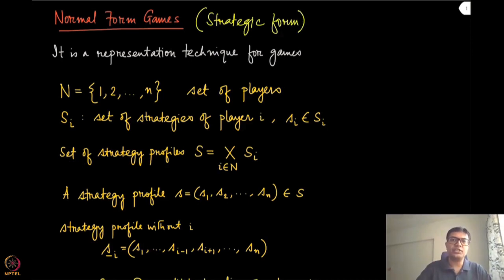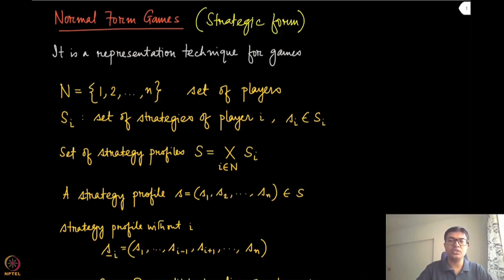Strategic form or normal form games are most appropriate to represent games which are of one round. The moment you pick your actions, the outcomes are realized and you get your utilities. One example of such a one-shot game was the neighboring kingdoms dilemma that we discussed in the very first lecture.